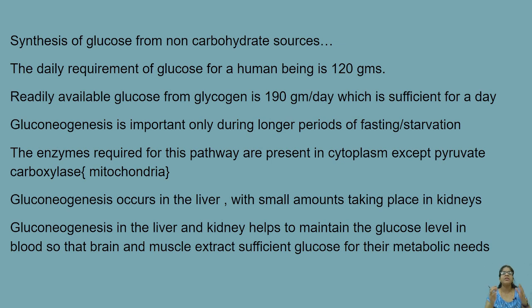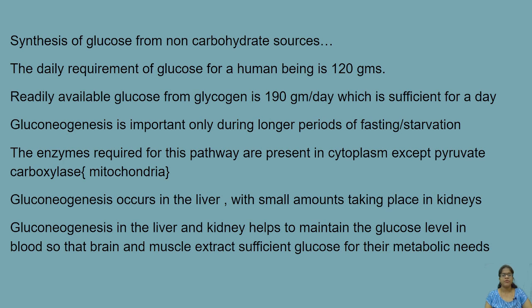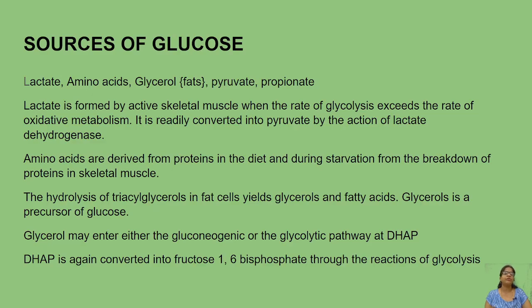Gluconeogenesis mainly happens in liver cells, and about 20% occurs in kidney cells. Glucose is a direct fuel for RBCs and the brain, so it must be produced during starvation conditions. The non-carbohydrate sources include lactate, amino acids, glycerol, pyruvate, and propionate — these are converted into glucose.